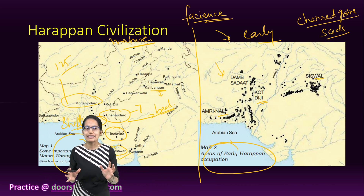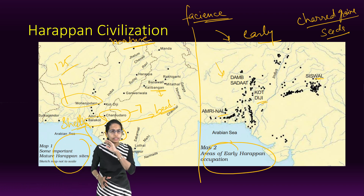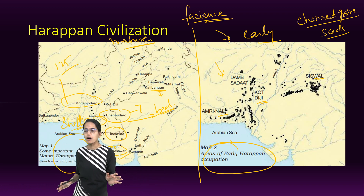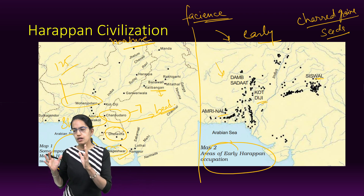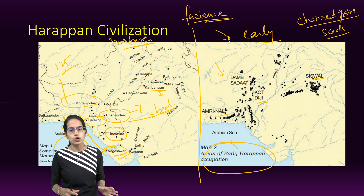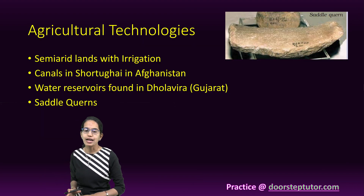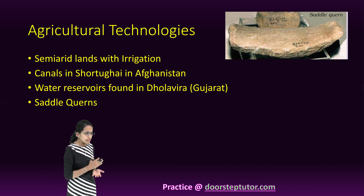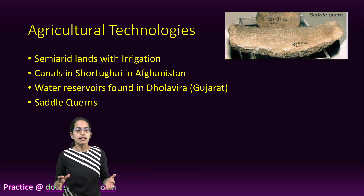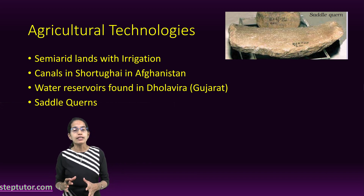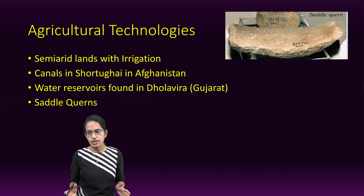Some important things about the Harappan civilization overall: there were no extremely large settlements found, no large buildings were found. Agriculture was the main activity, pastoralism was seen, pottery was another important thing, and then art and craft. Most of the land was semi-arid, and on those semi-arid lands, irrigation was done. The way irrigation was done was very different in different regions.